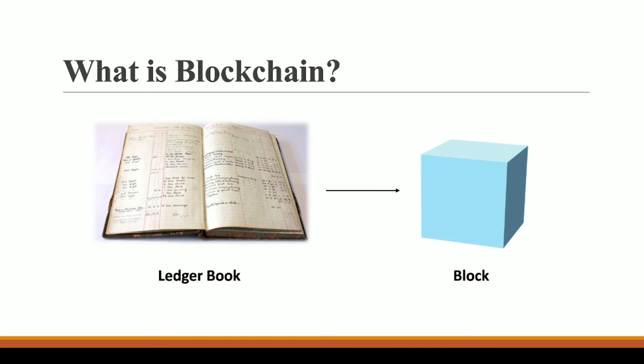Similarly, if C is sending some bitcoin to D, that transaction will also be recorded on a block of the blockchain. This is the meaning of our first keyword. The second keyword is immutable.